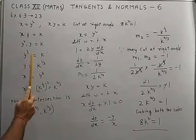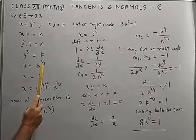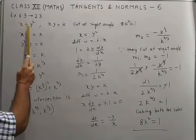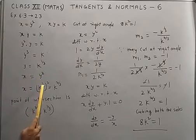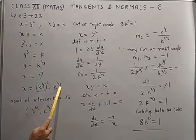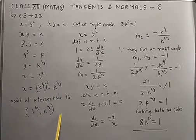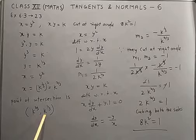y is equal to k^(1/3). This is the y coordinate. Now for x, x is equal to y². Replace y by k^(1/3), you get k^(2/3). So the point of intersection is (k^(2/3), k^(1/3)).